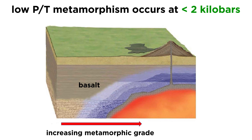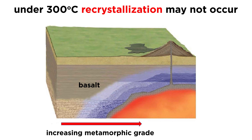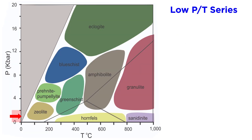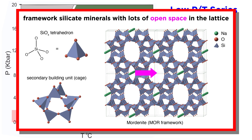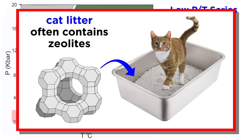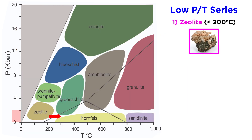We will now consider the progressive contact metamorphism of a mafic rock like basalt. It should be noted that at lower temperatures, less than 300 degrees Celsius, recrystallization may not occur due to poor reaction kinetics. The lowest grade metamorphic facies is the zeolite facies, occurring below 200 degrees Celsius. Zeolite refers to a group of framework silicate minerals that have large amounts of open space in their lattice. Cat litter often contains zeolites due to their ability to absorb large amounts of water.